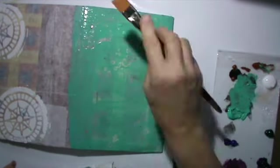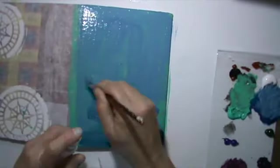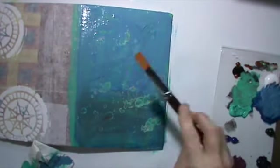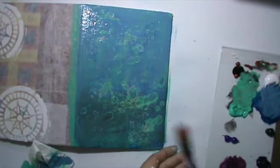I start with this turquoise quite thinned down with water, otherwise it doesn't work that good with the alcohol drippings. I do that layer by layer.